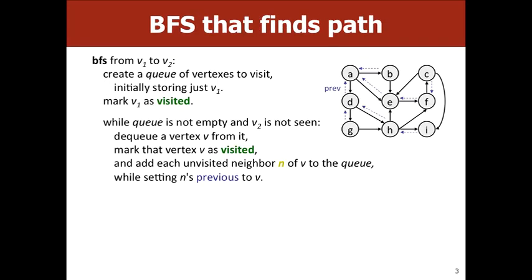Hopefully this looks somewhat familiar from Friday. The idea behind breadth-first search is you're storing all the nodes you're looking for in a queue, and every time you see a new node you mark it as visited and look at all of its neighbors. The main difference to talk about today is: if we have this queue of vertices, you're never going to be able to reconstruct the path just from the queue.